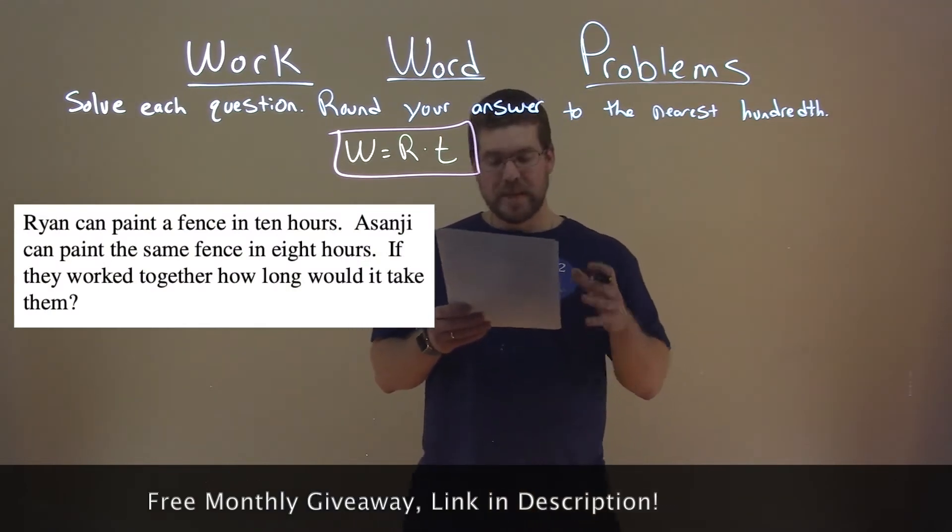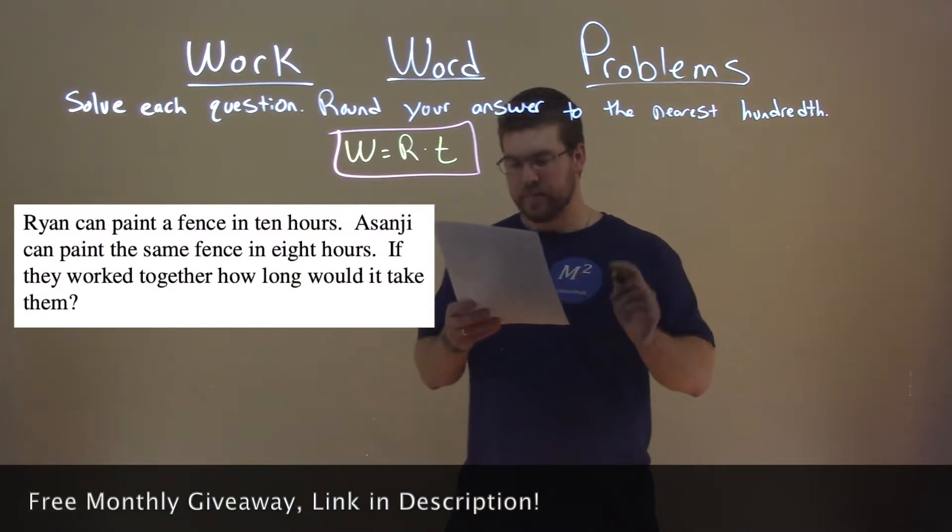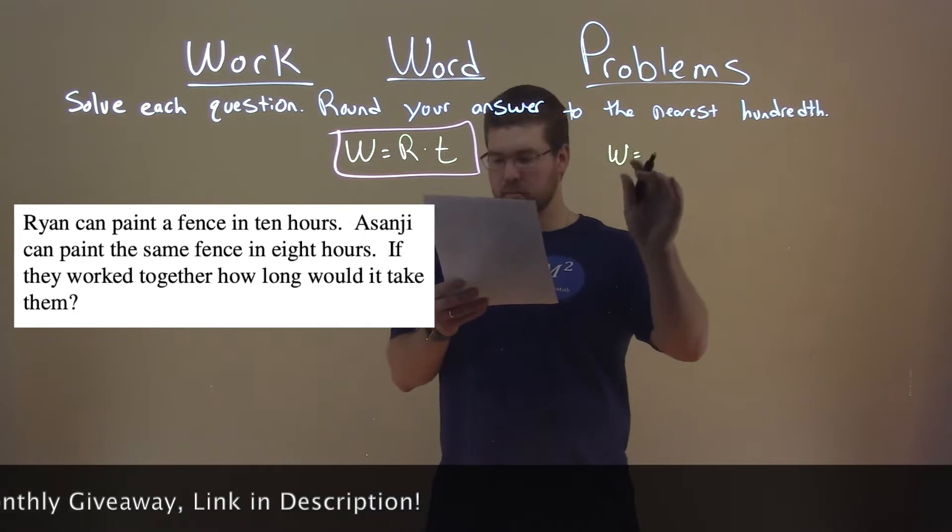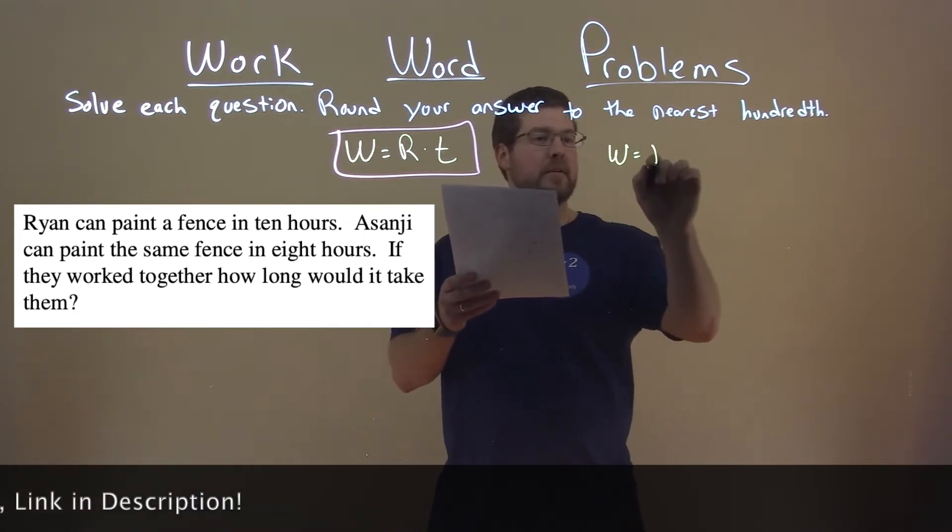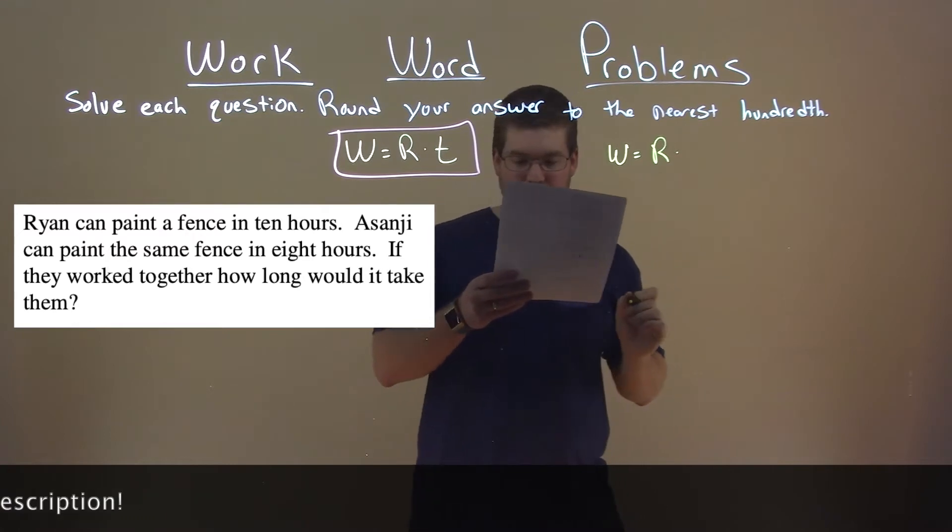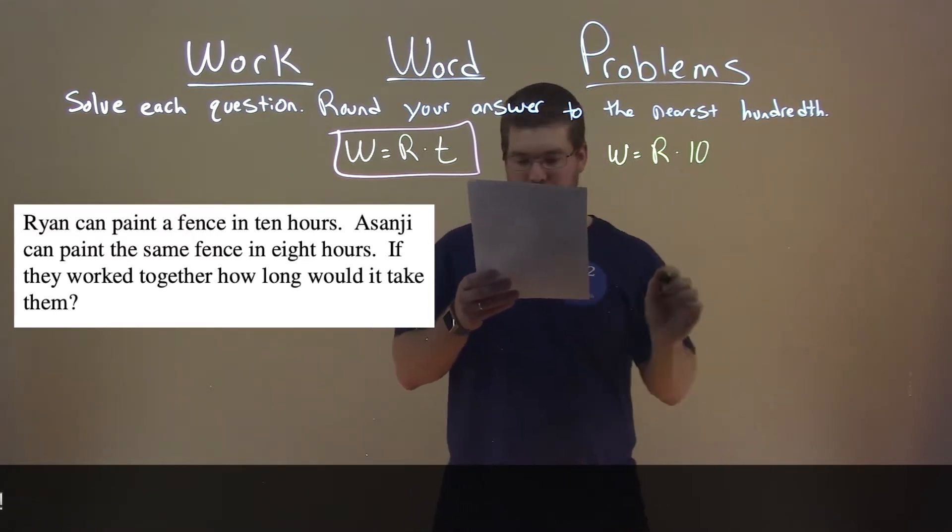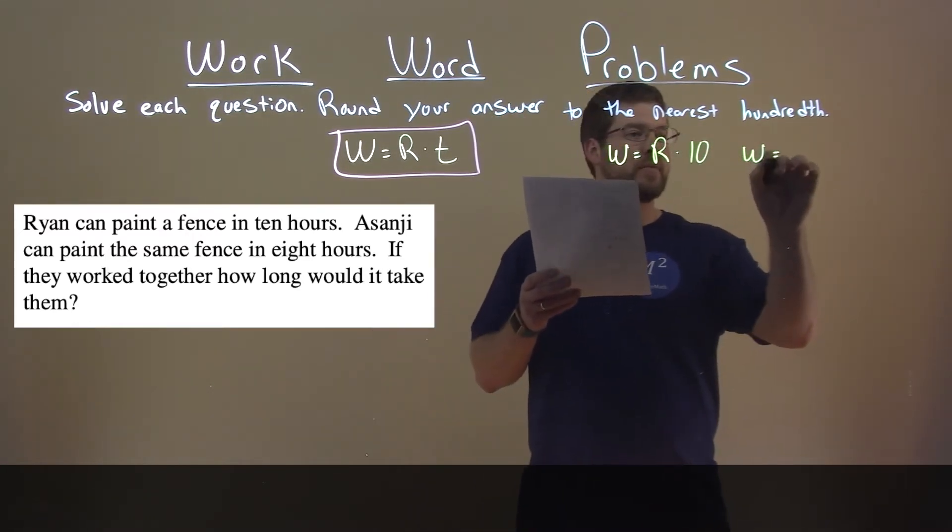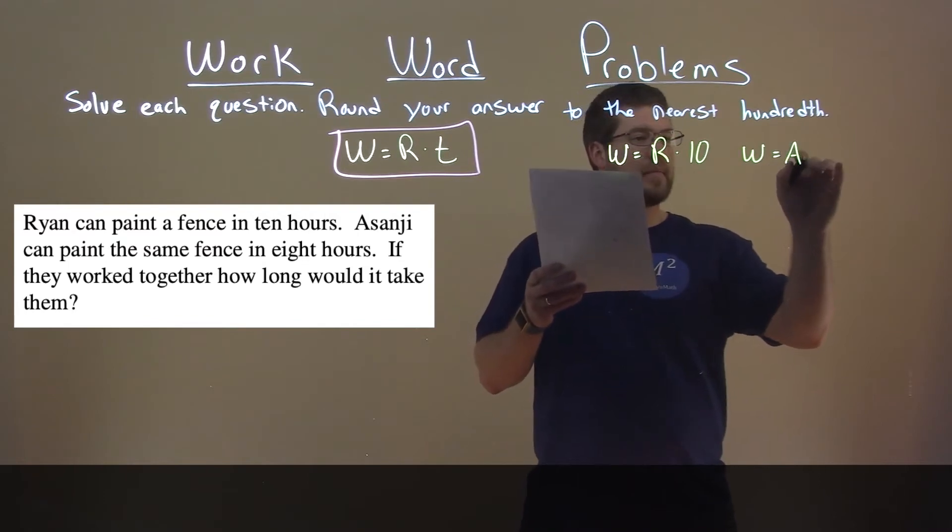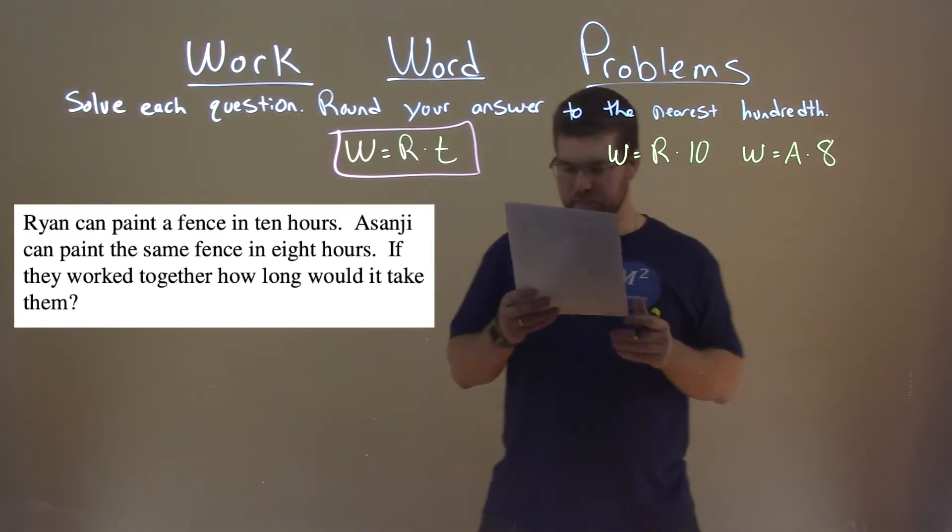So what can we do? We need to set up some equations here. We know that our work here, which is painting the fence, Ryan, whatever his rate is, he can do it in 10 hours. That same job, W, takes Asanji at his rate times 8 hours.